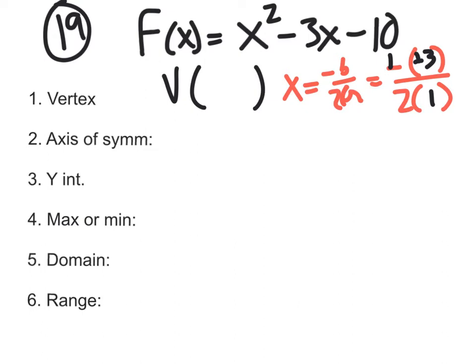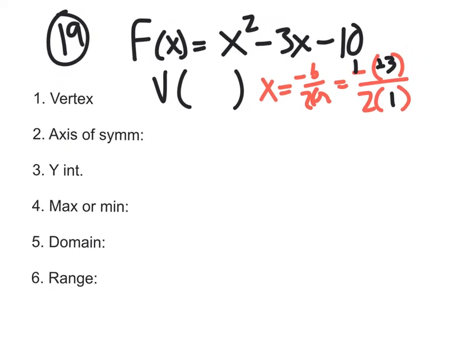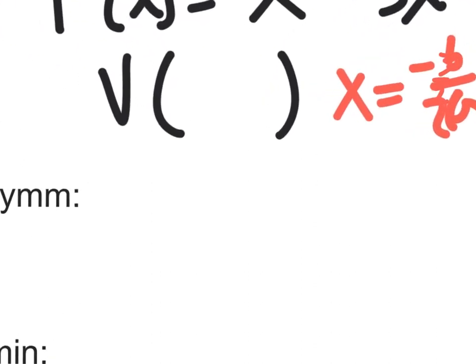You could either write it as, and let me zoom out here a little. You could either write it as 3 over 2, or you could write it as, if you take a calculator and divide 3 divided by 2, it's going to be 1.5. So you could write it as 1.5 as your x value of your vertex. That's really just 1 and a half. 1.5.